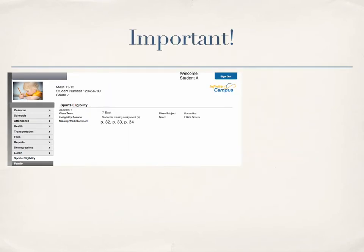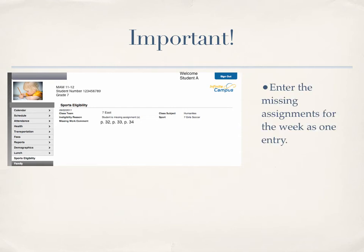Some things to keep in mind when you enter missing work for a student: enter the missing assignments as a whole for the week as one entry. As you can see here, the missing work is pages 32, 33, and 34. Try to avoid separate entries — that will become confusing.